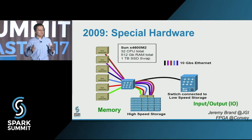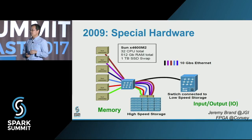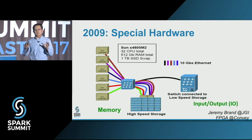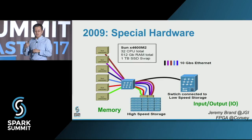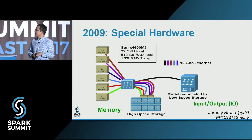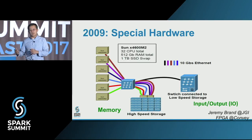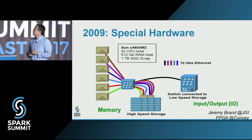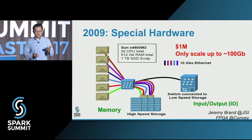We got six servers with half a terabyte of RAM each, connected to a very high-speed I/O system, to address the memory and I/O problems associated with big data. This was pioneered by talented hardware engineer Jeremy Brand at JGI. We also worked with a company called Convey, trying to use FPGAs to accelerate the computation. At the end of the day, we spent a million dollars but were only able to process about 100 gigabytes.